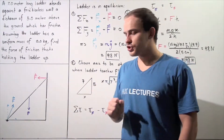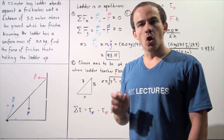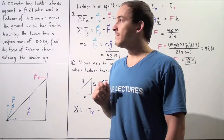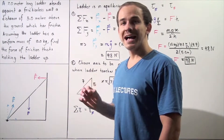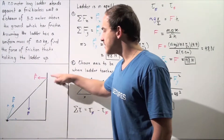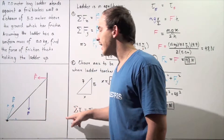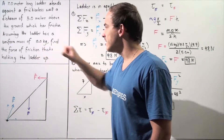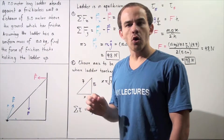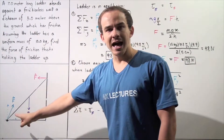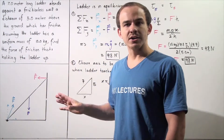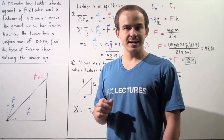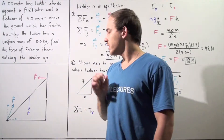Let's look at the following situation. We have a 7-meter long ladder that stands against a frictionless wall, a distance of 5 meters above the ground, which has friction. The wall is frictionless but the ground has friction. Assuming the ladder has a uniform mass of 10 kilograms, we want to find the force of friction acting on the ladder. We assume the ladder is in static equilibrium — it's not rotating and it's not translating along any axis.